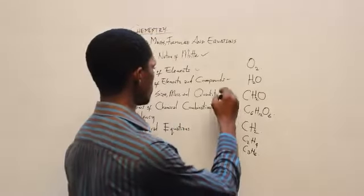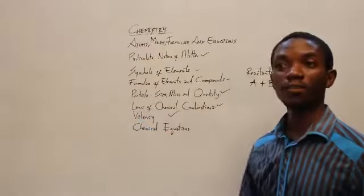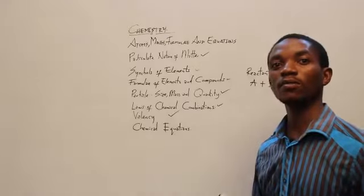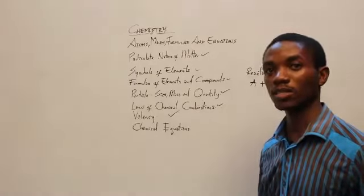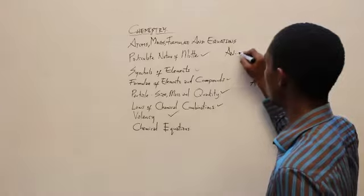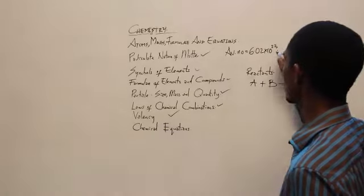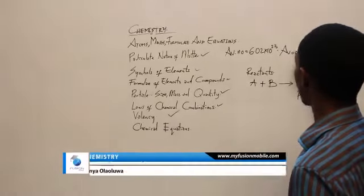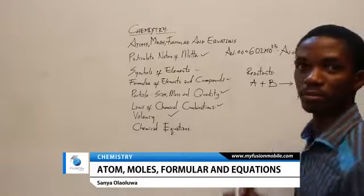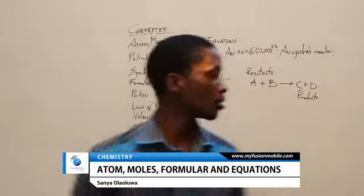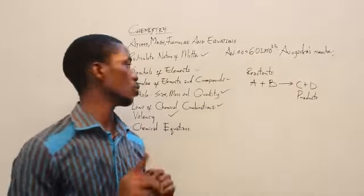That brings us to the laws of chemical combination. I forgot to mention Avogadro's number. Avogadro's number is the number of particles contained in one mole of a substance. It is represented as the Avogadro number and it equals 6.02 × 10²³ — that's the number of particles contained in one mole of a substance.